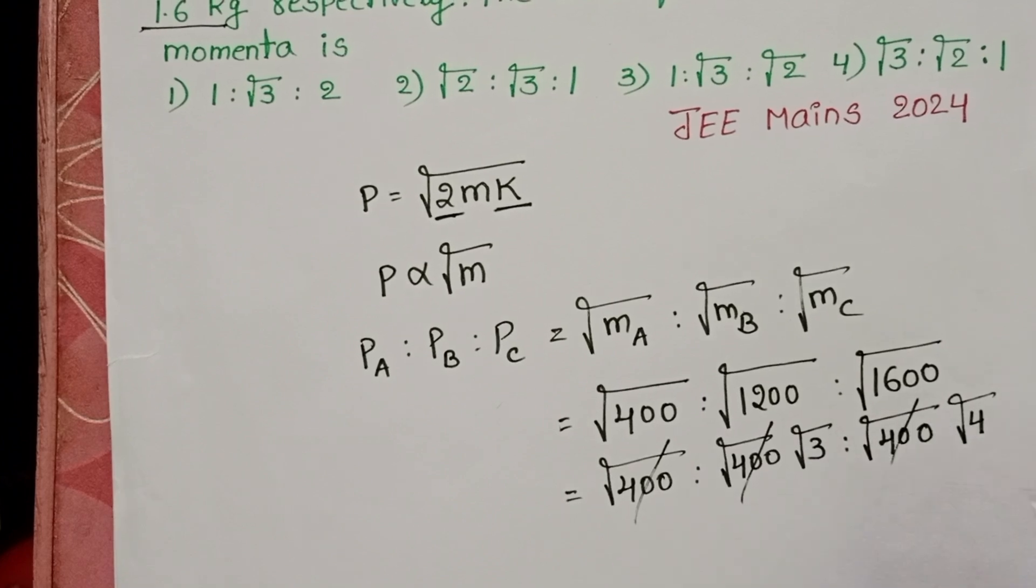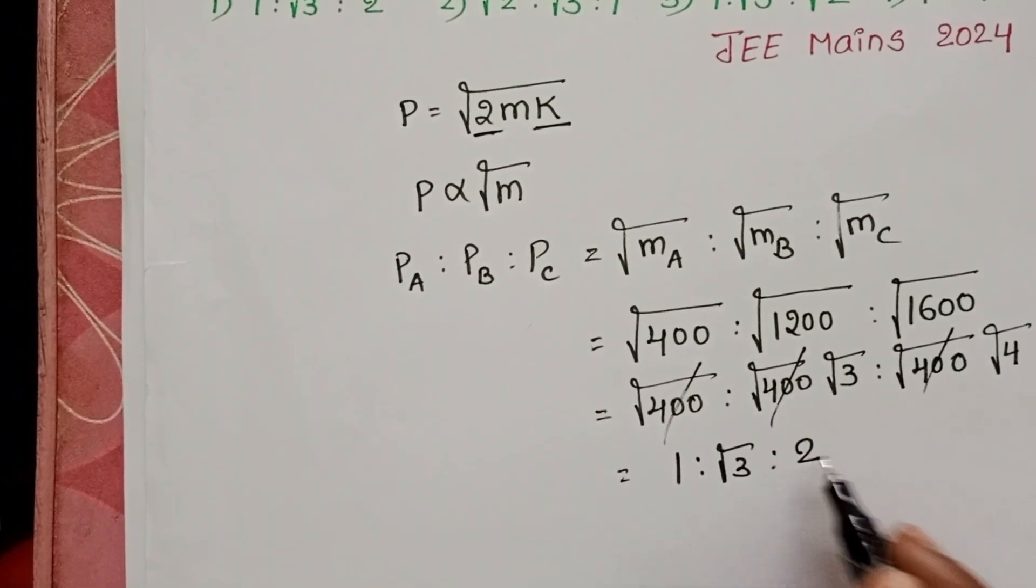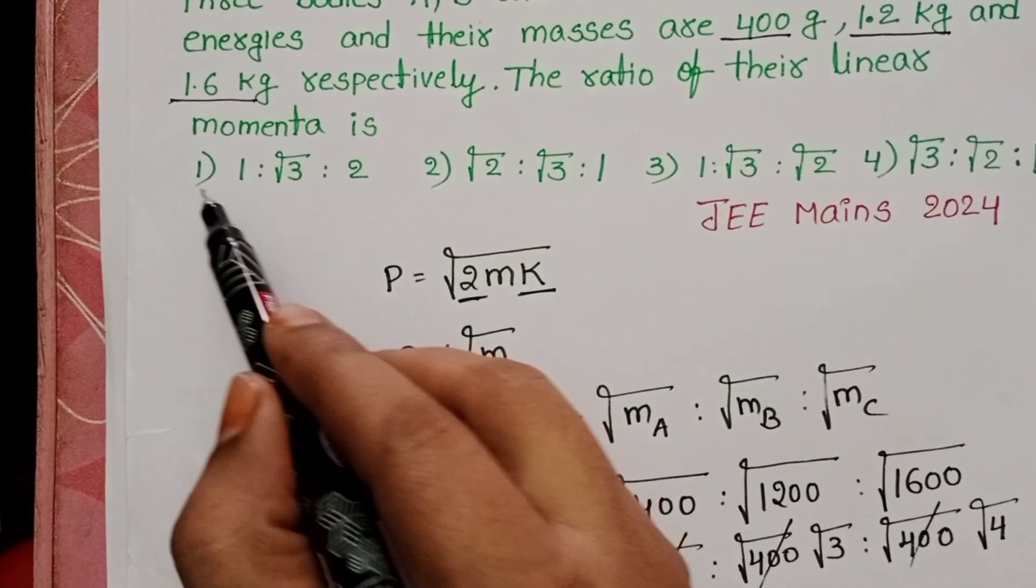Square root of 400 gets cancelled. 1 to root 3 to 2. The ratio of the linear momenta is 1 to root 3 to 2. First option is correct.